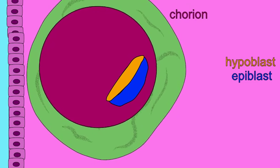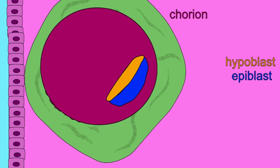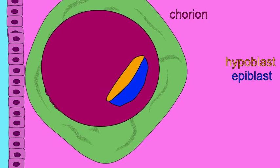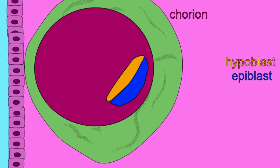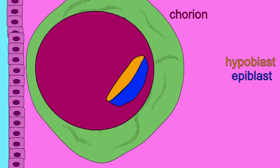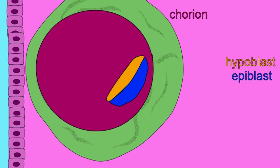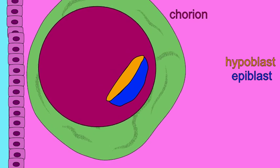These will form the fetal part of the placenta, which exchanges nutrients with maternal blood. Also, the chorion secretes HCG, the human chorionic gonadotropin, and the chorion will suppress the mother's immune system so that the mother's immune system does not attack the embryo.